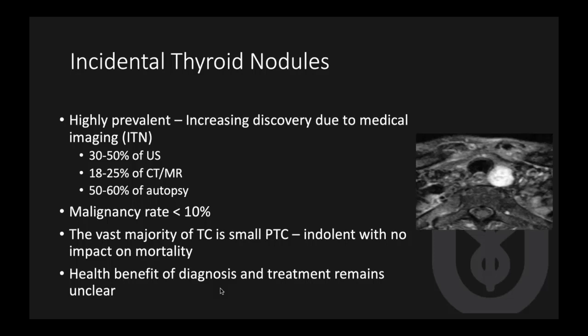Now let's talk about incidental thyroid nodules. They are very prevalent, and the increasing incidence is likely due to the use of medical imaging. 30 to 50 percent are found on ultrasound, 18 to 25 percent on CT or MRI, and 50 to 60 percent on autopsy — which means half of you may have a thyroid nodule. But the malignancy rate is less than 10 percent.